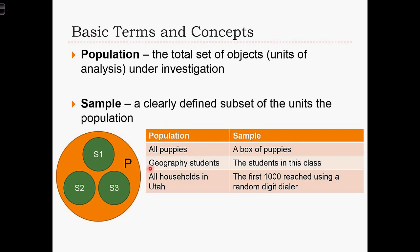A population could be all the geography students in the department, and the sample might be just the students in this class. Alternatively, the population could be all households in the state of Utah, and we might sample by calling households—forming a sample from the first 1,000 households we reach when we randomly call across the state.